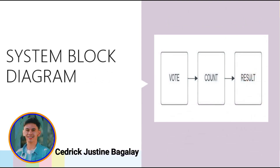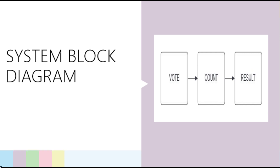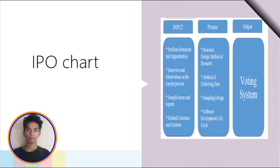For the system block diagram of the Voting Machine Using MATLAB GUI: the flow goes from vote into count, and count into the result.